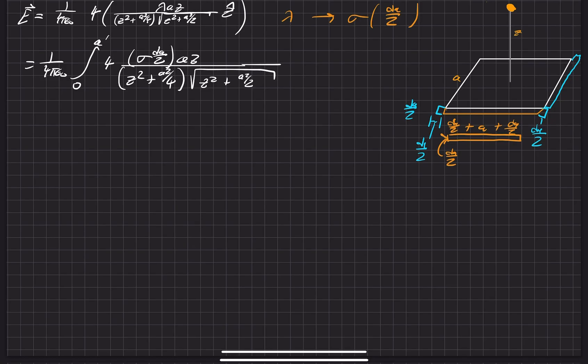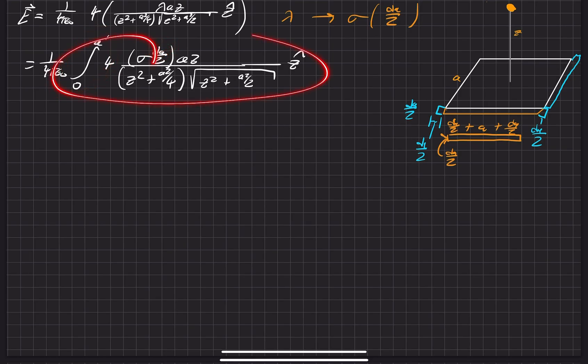This is the z-component, and this is our dA for the integration. We can clean up some terms: the 4 cancels out with the other 4, and then we can bring the 2 out in the next step.